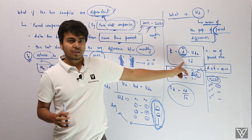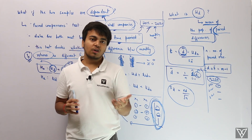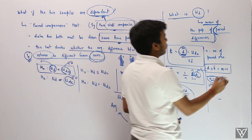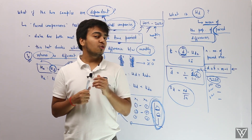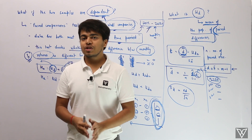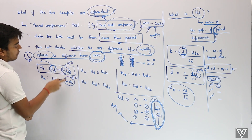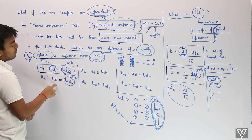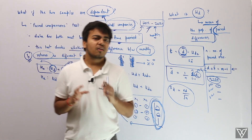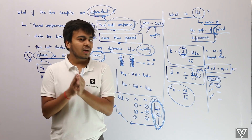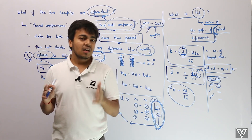You calculate the t-statistic and compare it with the t critical value from the t-table. The degree of freedom to use is n minus 1. Based on this comparison, you either reject or do not reject your null hypothesis. If you reject, you conclude that there is a statistically significant difference between the paired observations — the average difference is significantly different from zero.